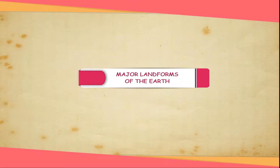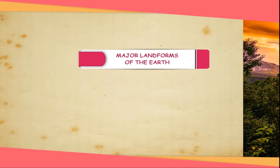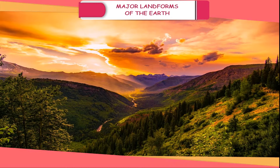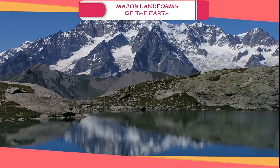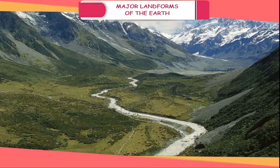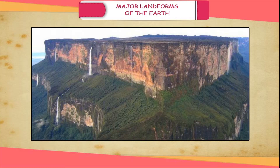Major Landforms of the Earth. A landform is the natural feature of raised land or depressed land, like the mountains, hills, valleys and plateaus, etc.